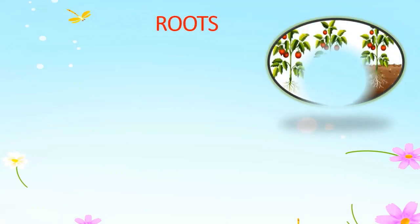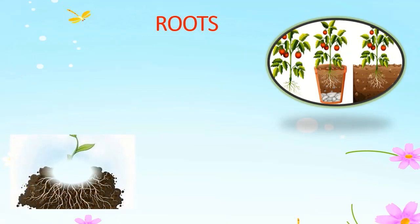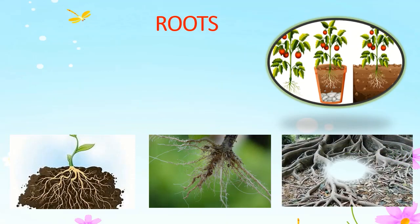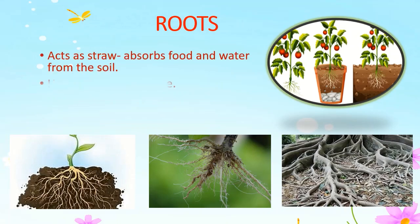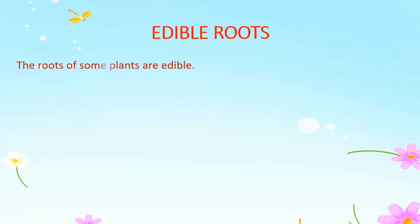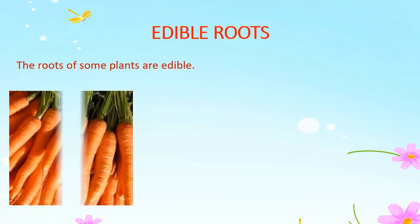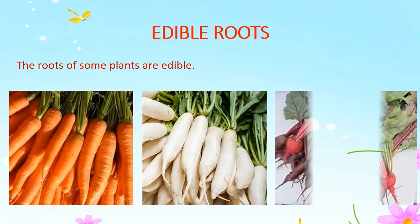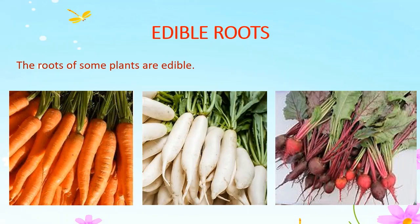Roots are responsible for transferring water and minerals from the soil to the plant. Roots lie below the surface of the soil and hold the plant firmly in place. Small plants have thin roots and can be uprooted easily. Trees have thick roots that grow deep into the soil. We eat the roots of some plants, such as carrots, radishes and beetroots.